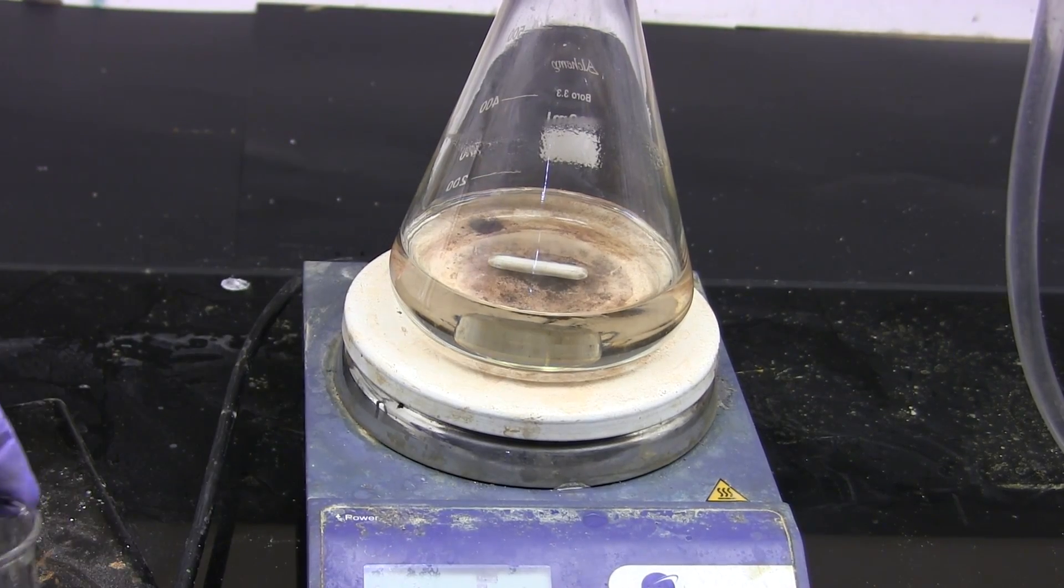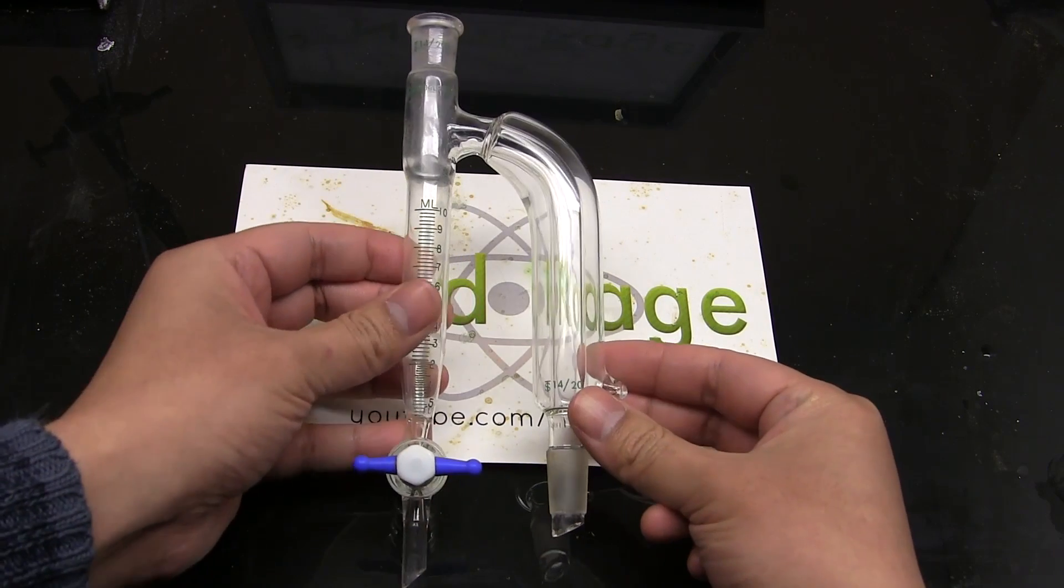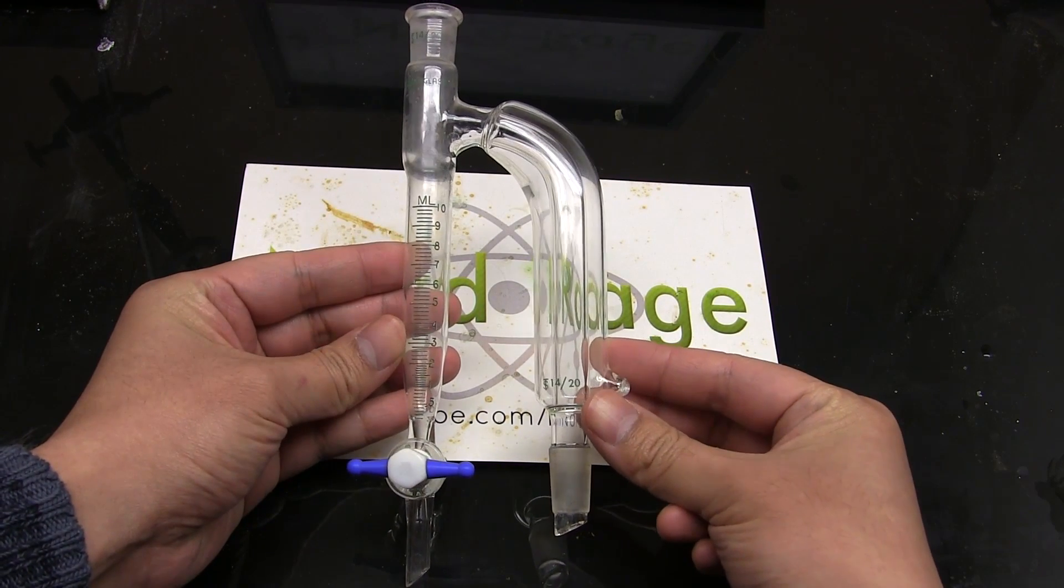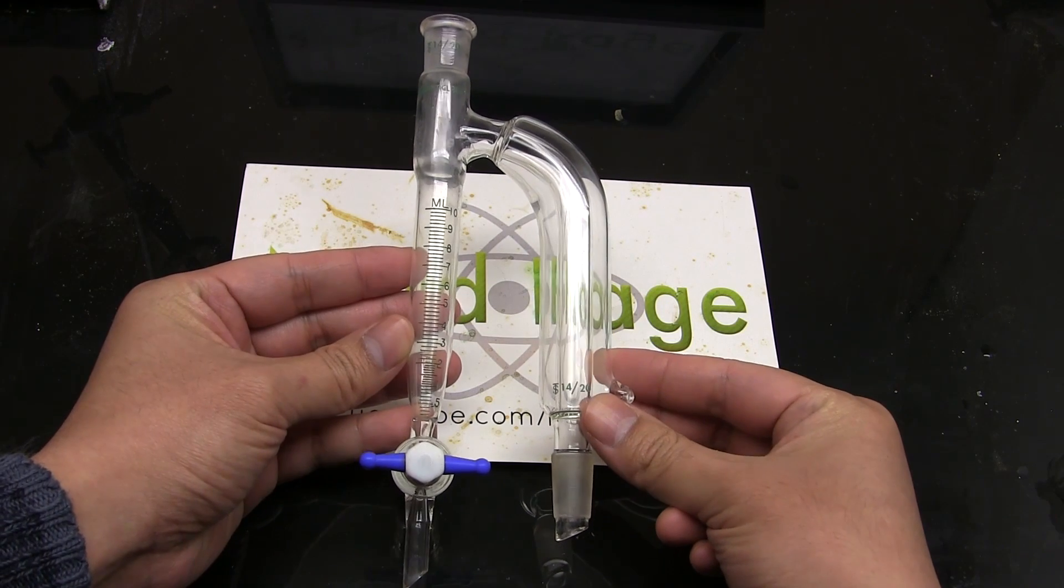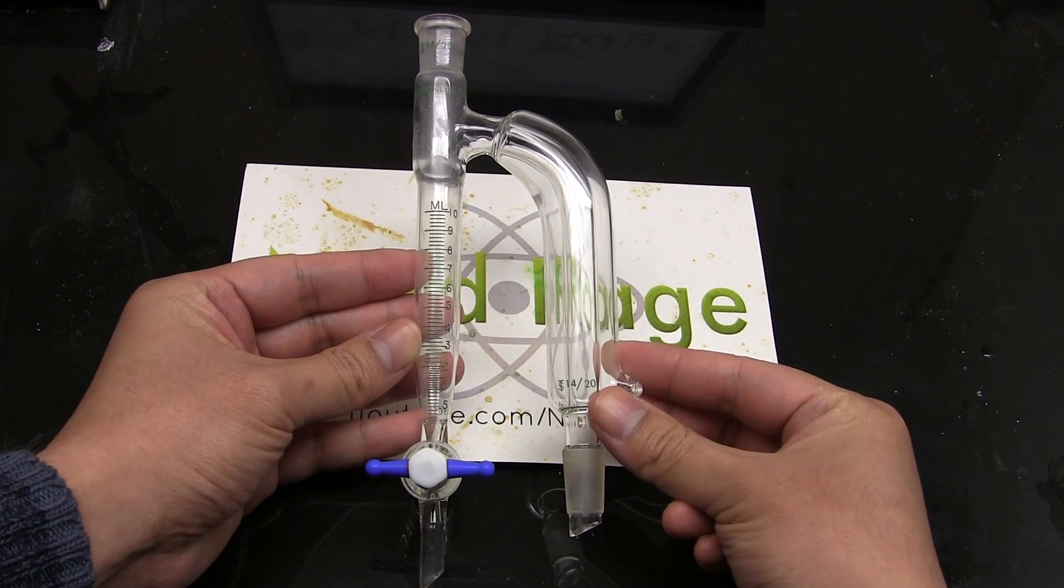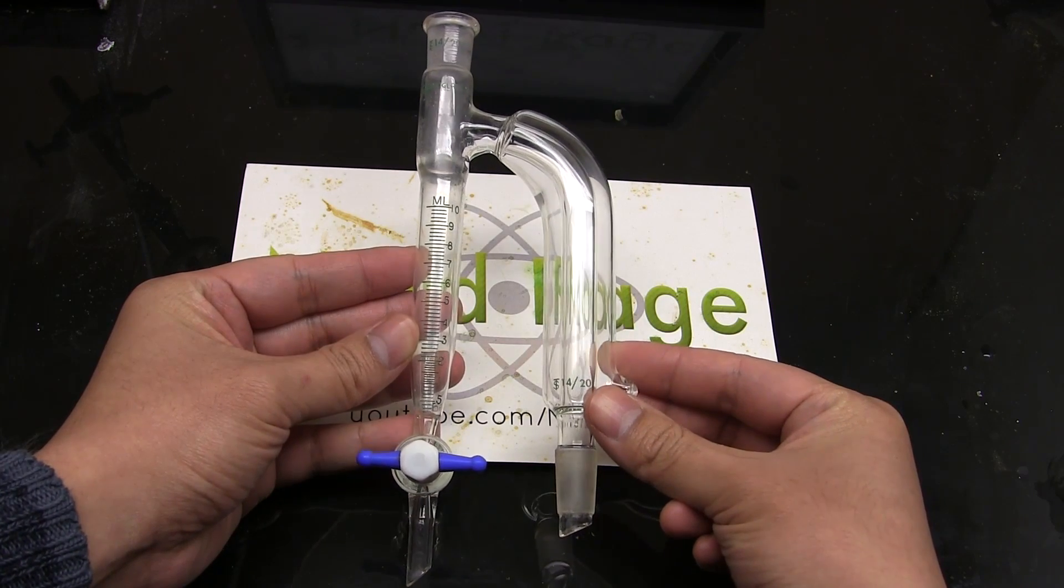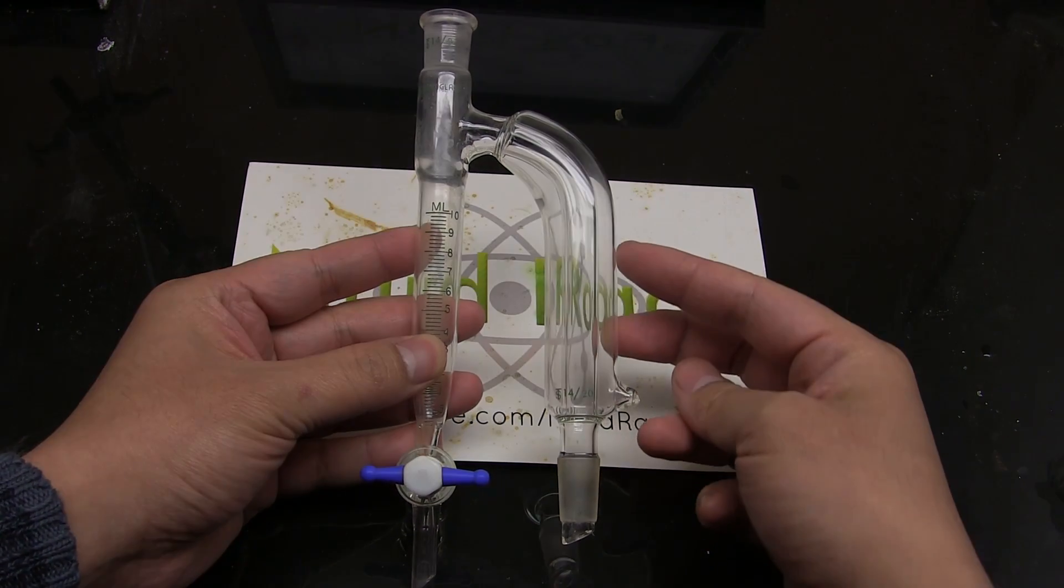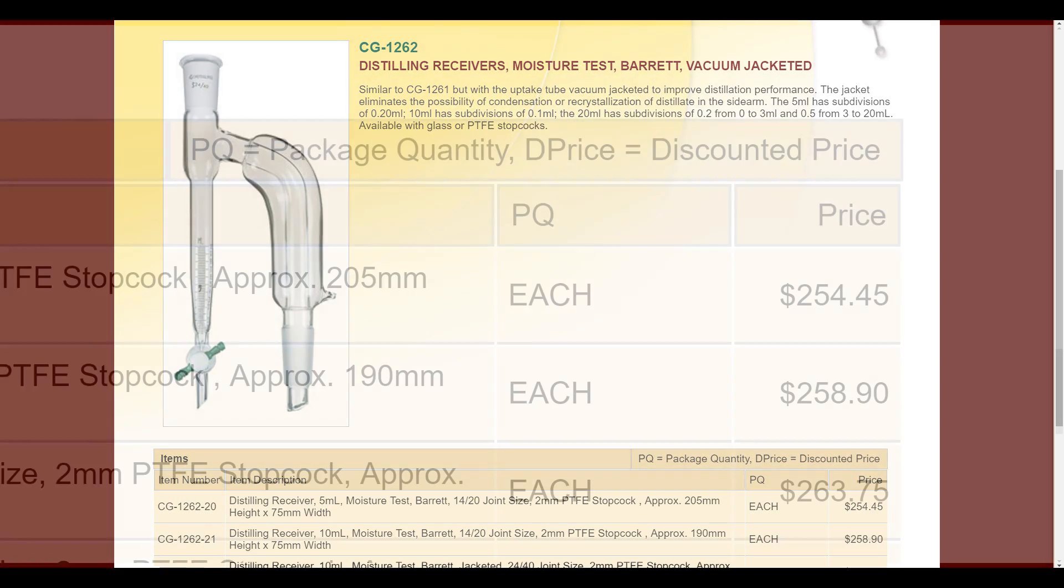Now I've seen Dean-Stark traps cost anywhere from twenty dollars to several hundred dollars depending on the size, the quality and extra features like vacuum jackets or the ability to return the heavier phase rather than the lighter phase. So you'll have to select the one that suits your needs. This one here was generously donated to me but if I had to purchase this exact model it would have cost me around 250 dollars from the original manufacturer.